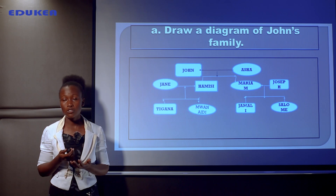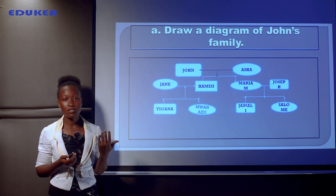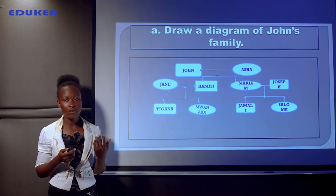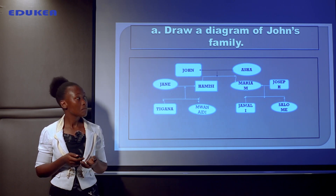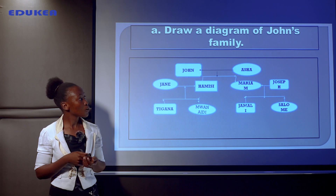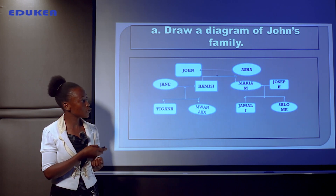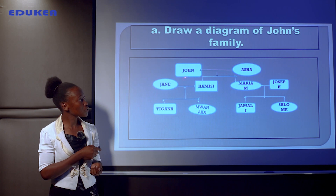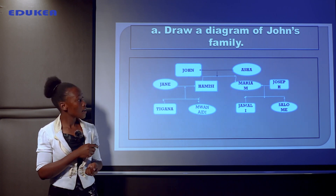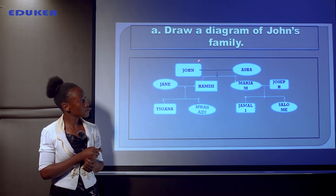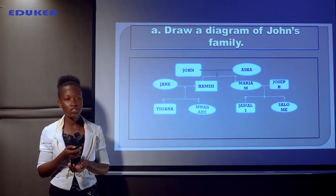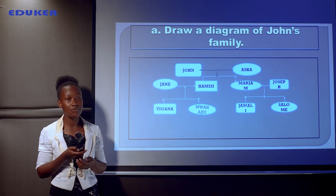We can also look at kinship relationships using other terms — sister-in-law, brother-in-law, mother-in-law, father-in-law. In this family, Joseph calls John and Asha his in-laws: John is his father-in-law and Asha is his mother-in-law. The kinship relationship grows as the number of family members increases. That marks the end of our discussion today. Welcome to another session on another exam.